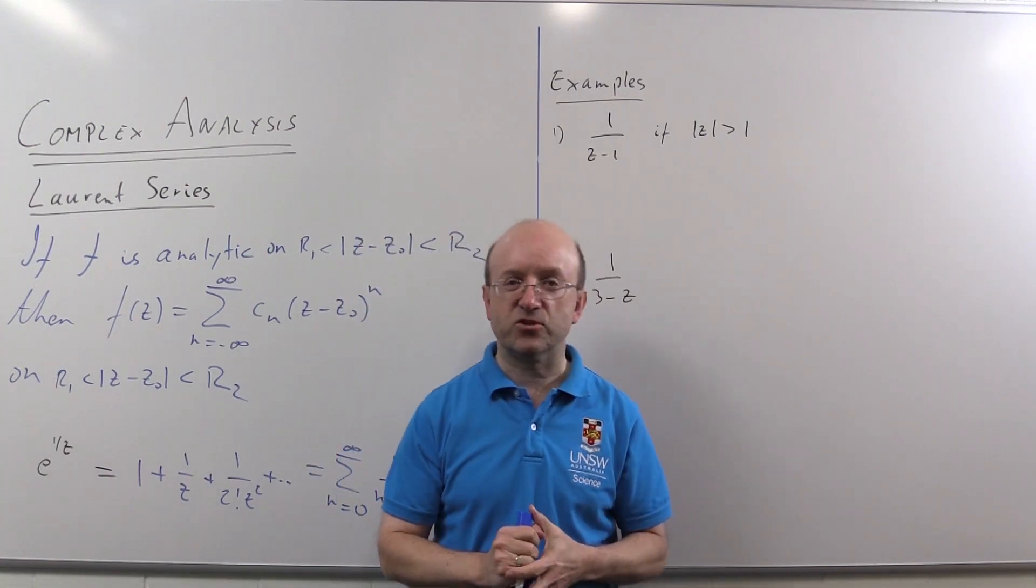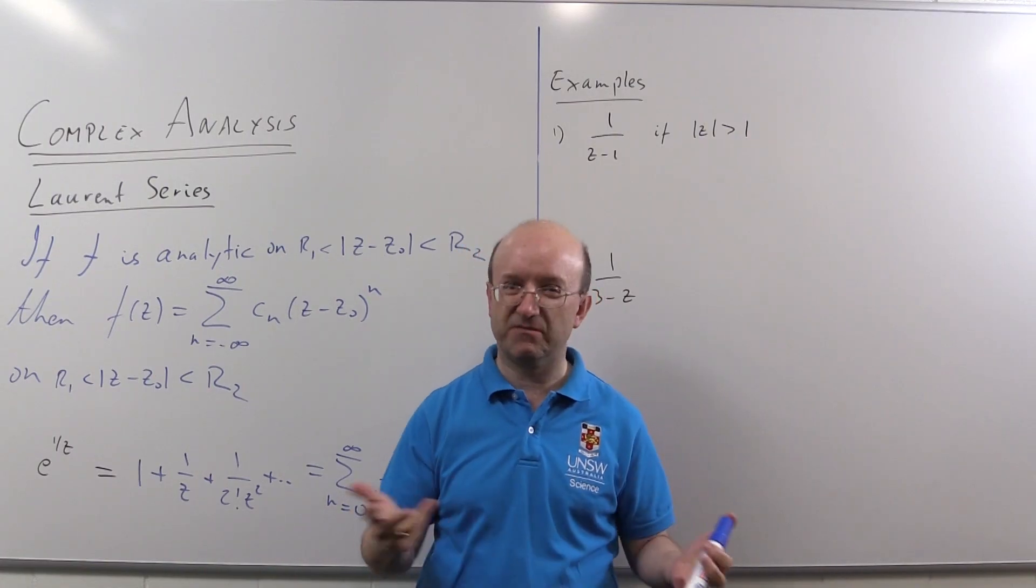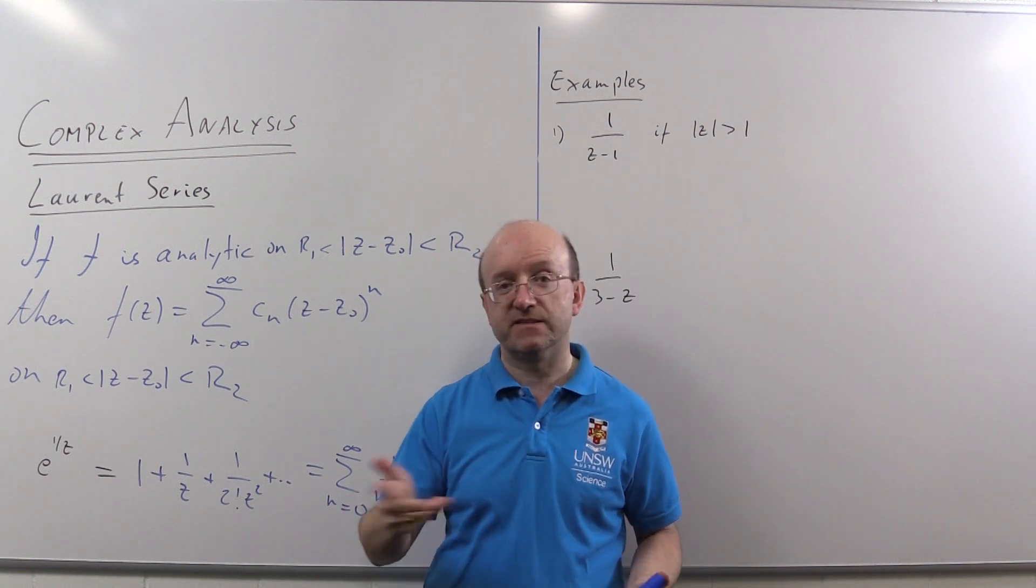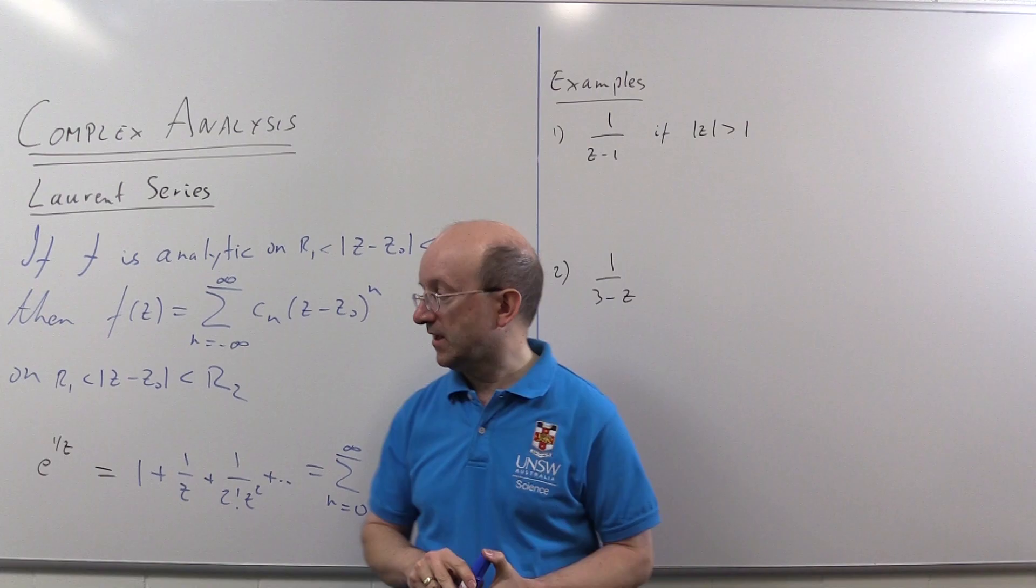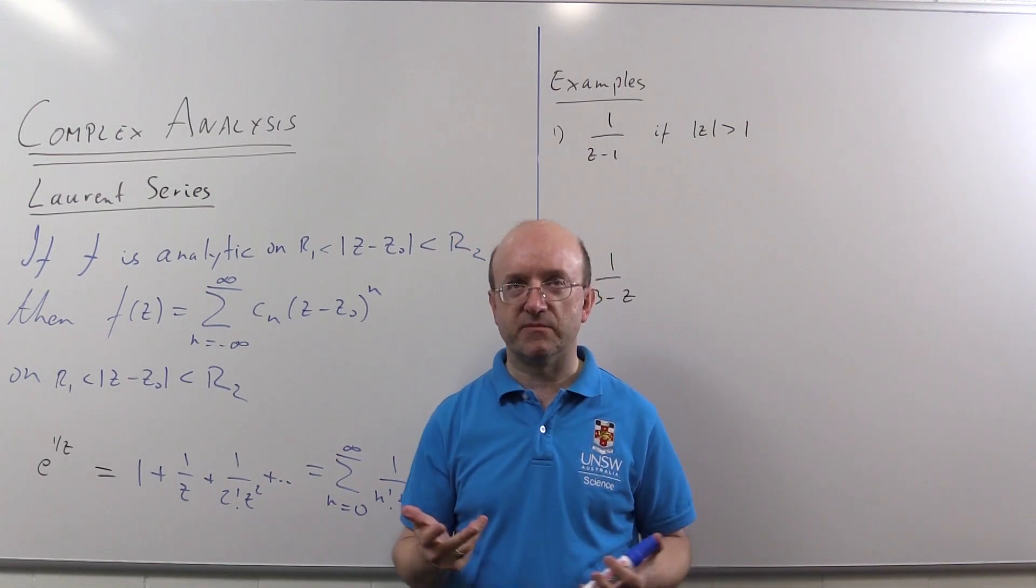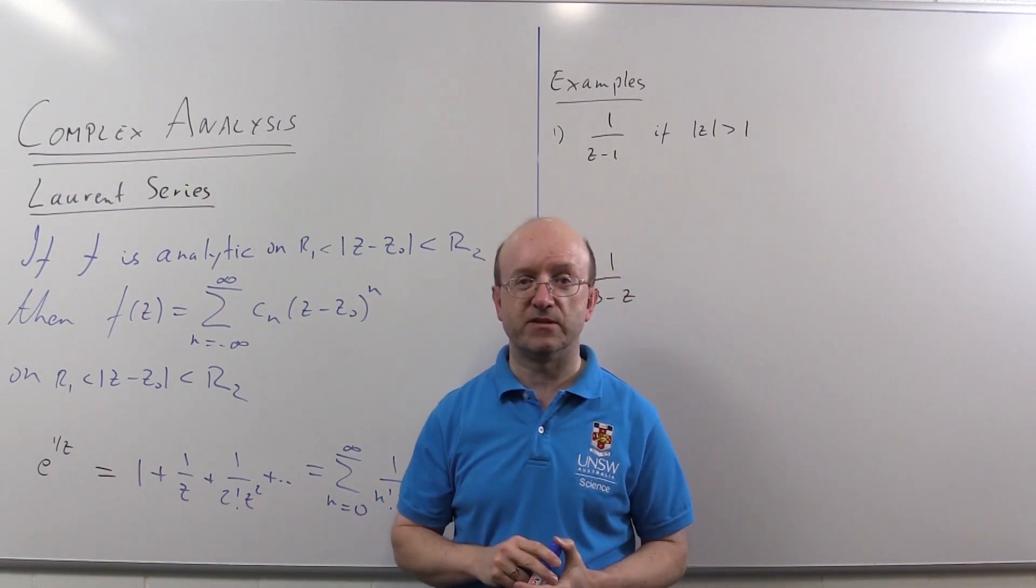Before I do that I should point out that just like Taylor series, you can add, subtract, multiply, divide if you're careful about zero, Laurent series, and you can differentiate and anti-differentiate them term by term. So if I wanted the power series for the derivative of e to the 1/z, that's minus e to the 1/z on z squared, I just differentiate this thing term by term.